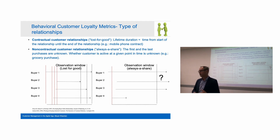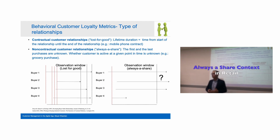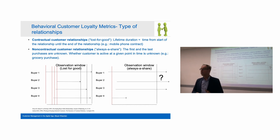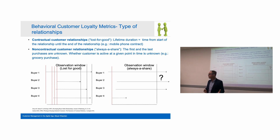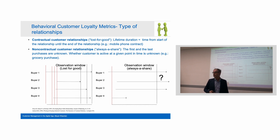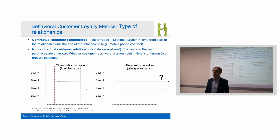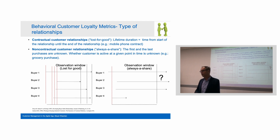To measure that, there are two different contexts. The first is the always-a-share context, which is the context of grocery or retail. In this context, you don't really know when the customer enters the database unless you have a loyalty program. But even if the customer takes a loyalty card, you don't really know if the customer had bought before — which is probably the case, since you start buying in a supermarket and likely take the loyalty card only after a couple of purchases.